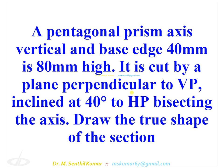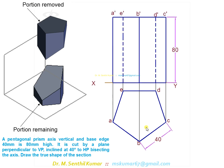A pentagonal prism is standing vertical — this is the three-dimensional shape of it. After cutting it, generally you would assume that the portion above the cutting plane is to be removed. The portion between the section plane and the horizontal plane is what remains. In this case, the object remaining between the section plane and the horizontal plane is kept; the top part is removed. Complete the projection part first.